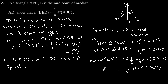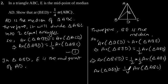Hence, we can say that area of triangle BED is equal to one-fourth the area of triangle ABC. Hence, we have proved.